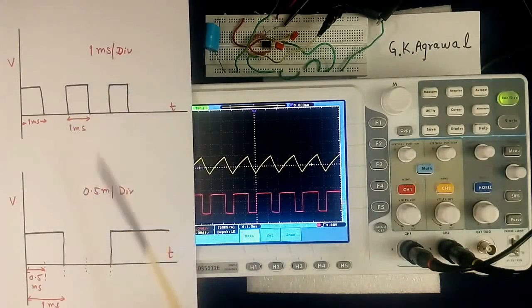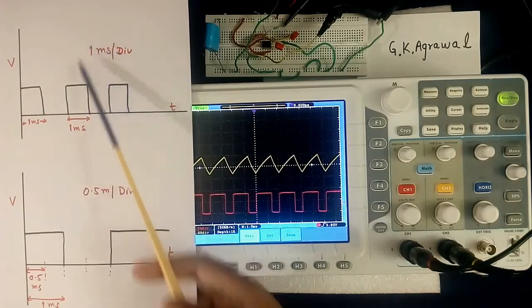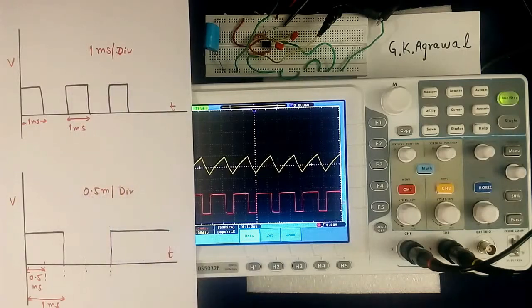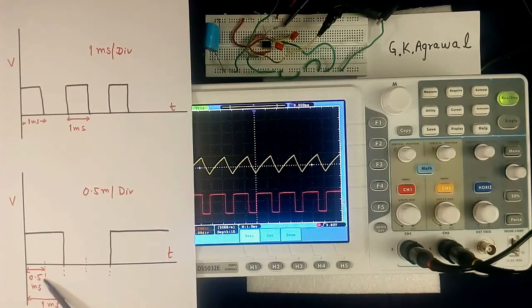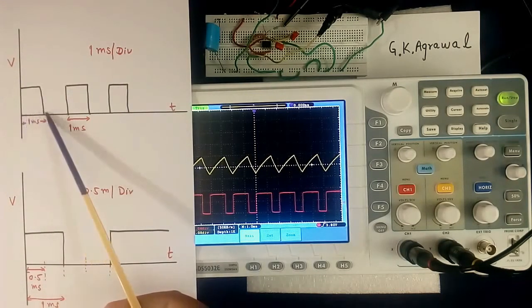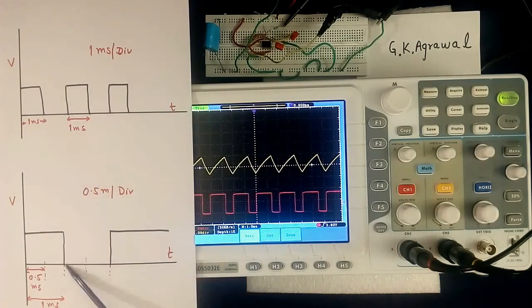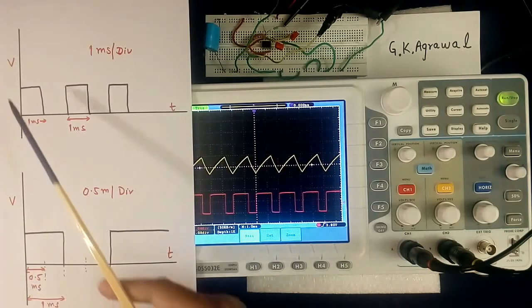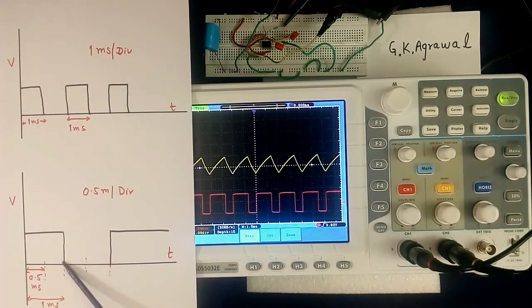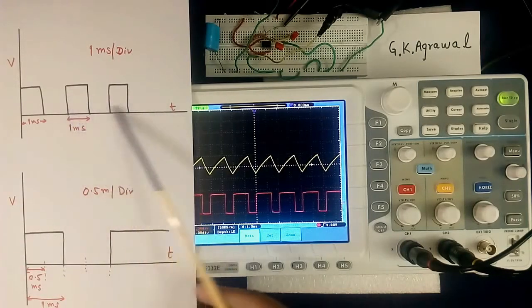Now suppose we change the scale from 1 ms to 0.5 ms. Then one division will be 0.5 ms. So to cover 1 ms full, two divisions are required. So this voltage is still coming down at 1 ms, but it is taking longer width because I have changed the scale. So this waveshape will look like this and everything will get shifted.